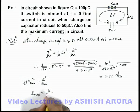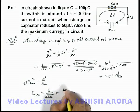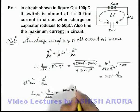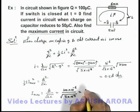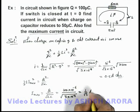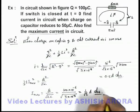So from here we get the value of i_max to be Q/√(LC). If we substitute the value, this is 100 × 10⁻⁶ divided by √(3 × 10⁻⁸). On simplifying we are getting it 1/√3 ampere, that is another answer to this problem.